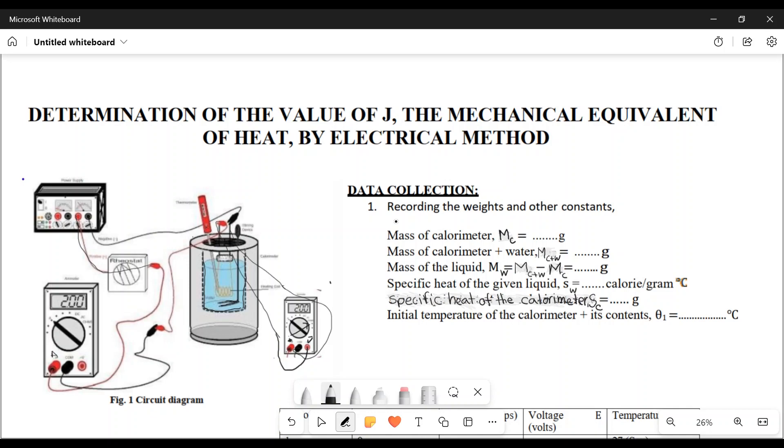From the actual data, the mass of the calorimeter is 49.41 grams. Mass of the calorimeter plus water is 112.97. Mass of the water is calorimeter plus water minus mass of calorimeter, which is 73.56 grams. Specific heat of water is one calorie per gram degree Celsius. Specific heat of the calorimeter, we used copper calorimeter, so it is 0.09 calorie per gram degree Celsius.